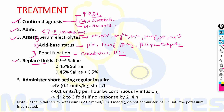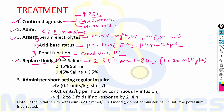Start fluid replacement with 0.9% normal saline, 2 to 3 liters over 1 to 3 hours, or 10 to 12 mL/kg/hour. Subsequently, switch to 0.45% saline (half normal saline) when hemodynamic stability and adequate urine output are achieved, at a rate of 250 to 500 mL/hour. Half normal saline is given to prevent hyperchloremia. Ringer's lactate can also prevent hyperchloremia but should be avoided in hepatic failure as it can worsen metabolic acidosis.